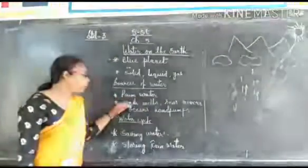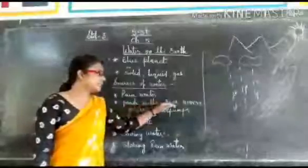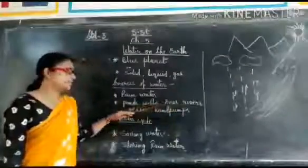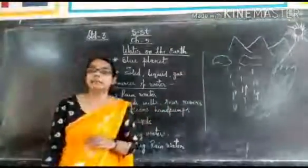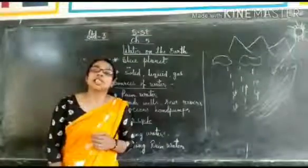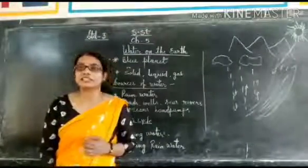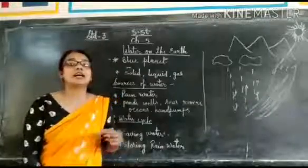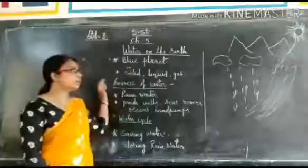Ponds, wells, seas, rivers, oceans and hand pumps. We use hand pumps and tube wells to take out the underground water. What is the water cycle?